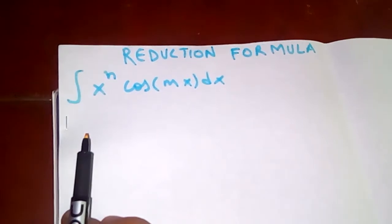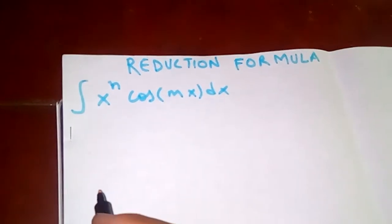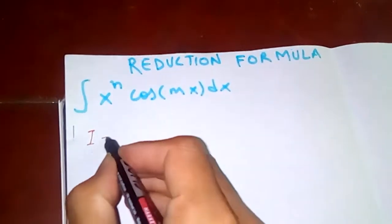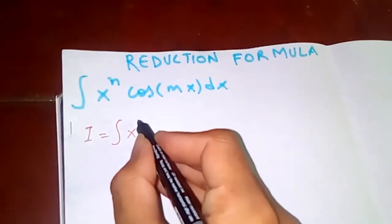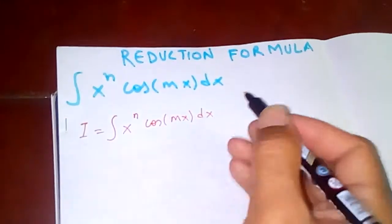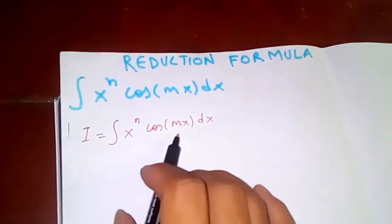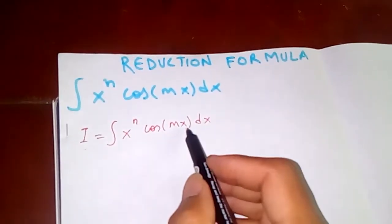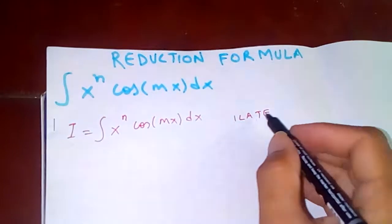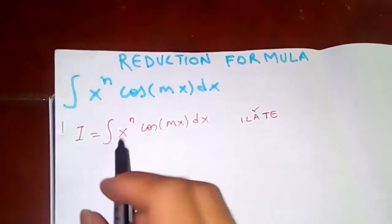Let's say m and n are positive integers. So I is equal to the integral of x to the n times cos(mx) dx. We can clearly see that we can integrate this using integration by parts. cos(mx) must be the second function.